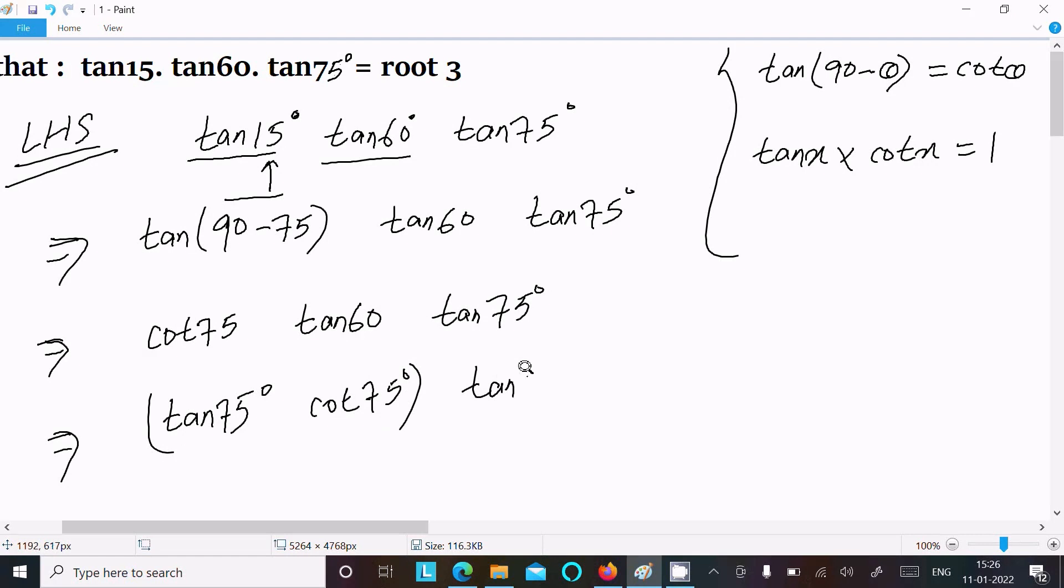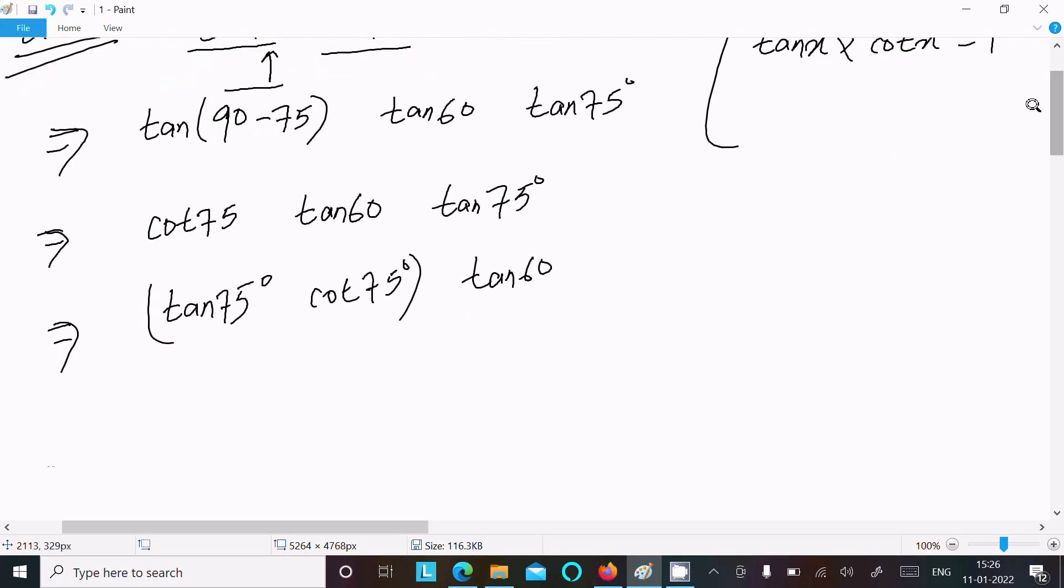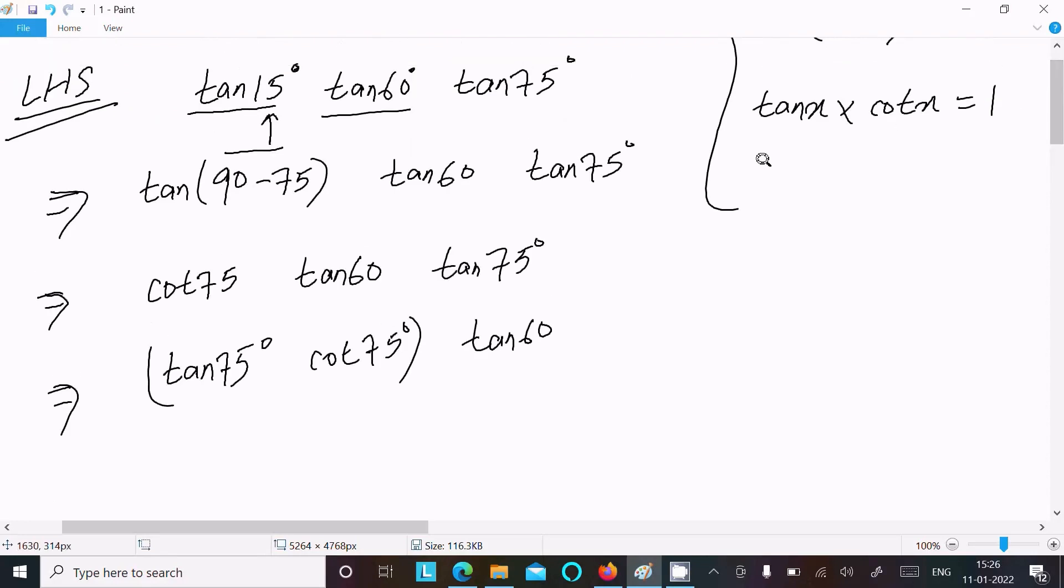Here tan60, so in x place here 75 is there, so tan75. Tan75 into cot75, the value is equal to 1.